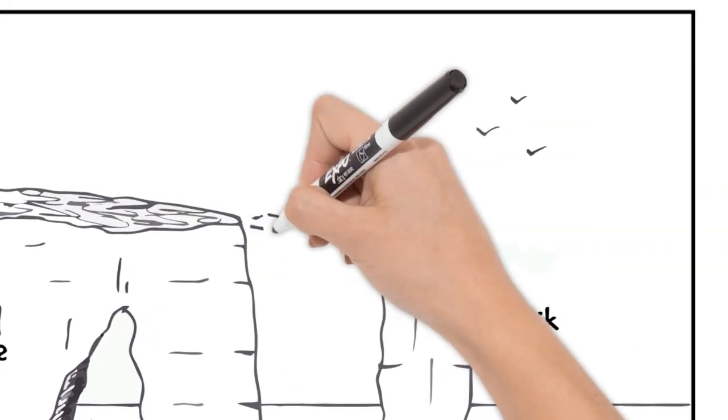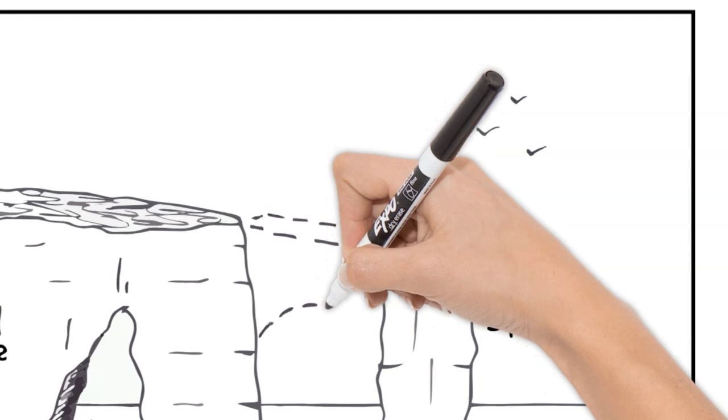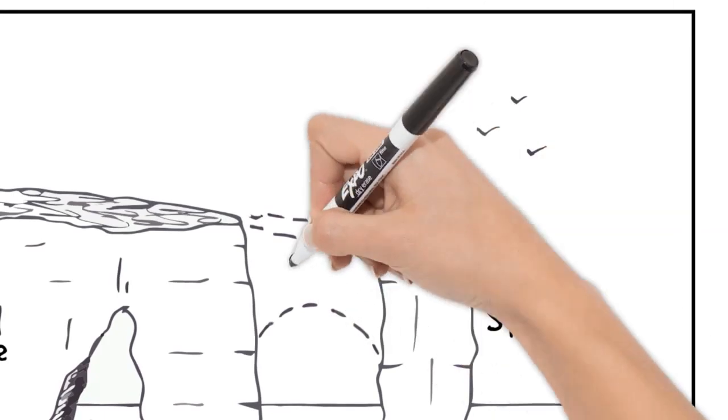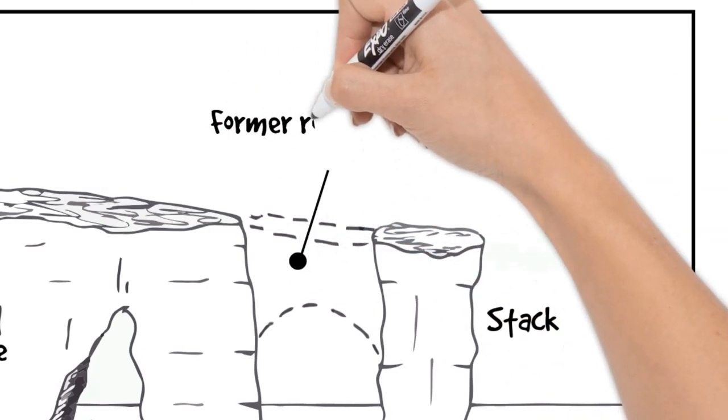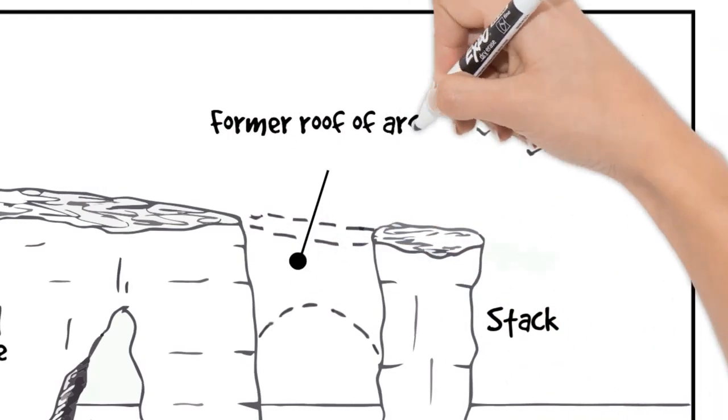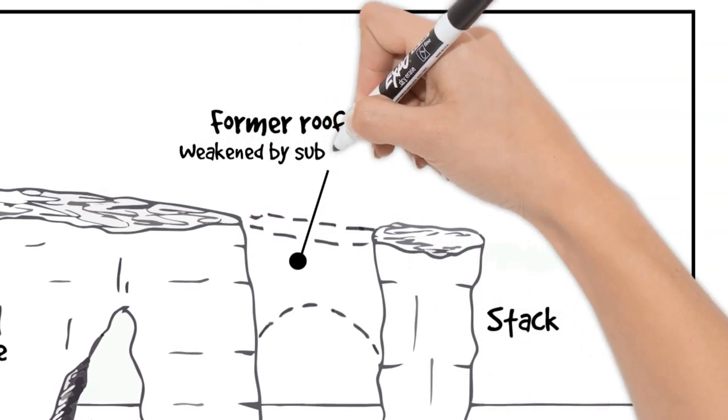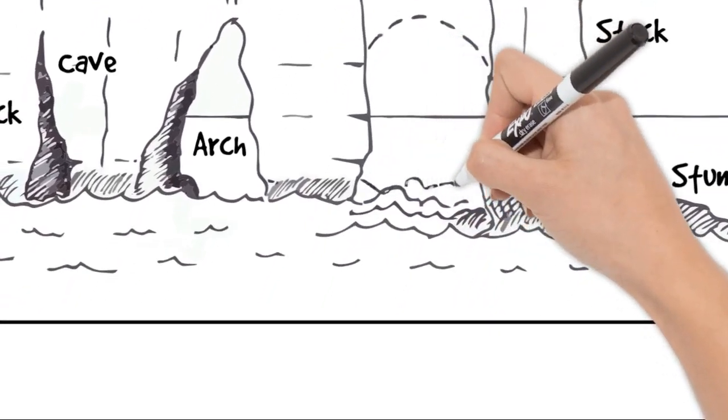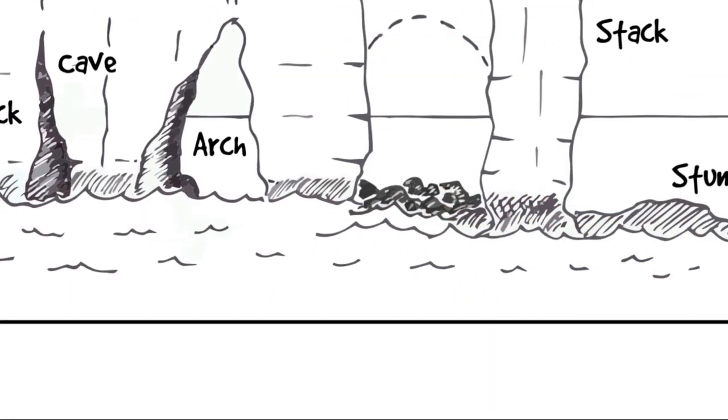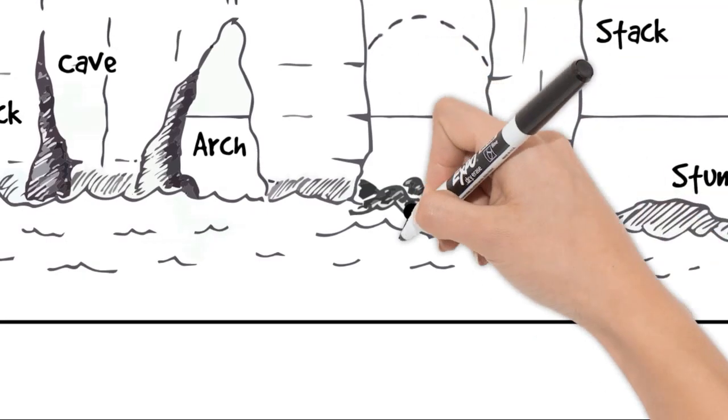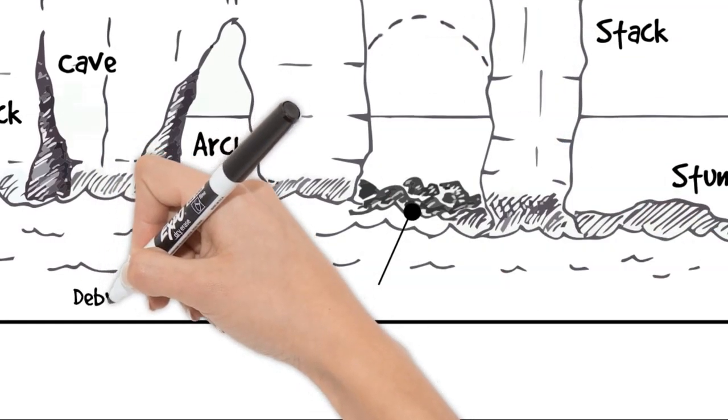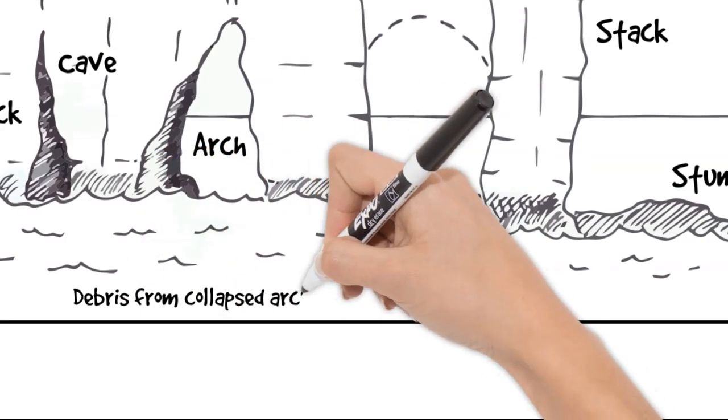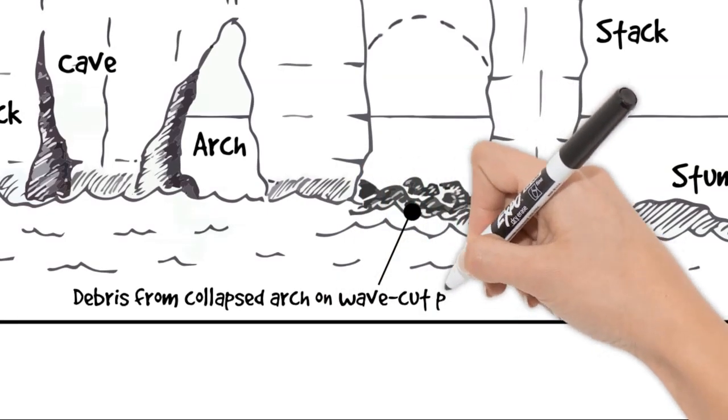Now we want to add some extra information here. We can show how the stack was formed from an arch. The dotted line labeled neatly shows how the archway used to be attached to the stack. But then that's been weakened by sub-aerial processes and has collapsed. So let's put some of the collapsed material on the wave cut platform underneath the collapsed arch. And let's label it clearly, debris from the collapsed arch now on the wave cut platform.